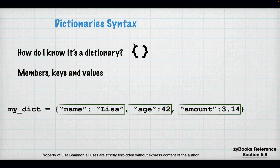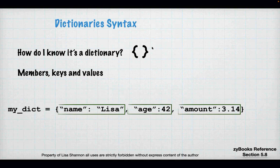You know it's a dictionary by curly brackets. A dictionary is a collection of key value pairs. A key is on the left-hand side of a colon, and a value is always on the right-hand side of a colon — that's why it's called a key value pair. The format is: key, colon, value, comma, another key, colon, value, and so on.